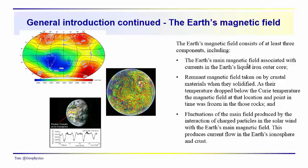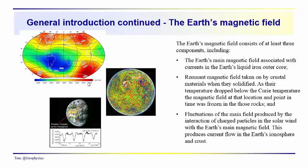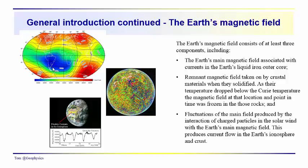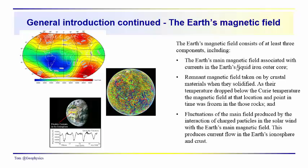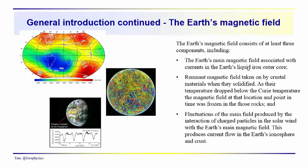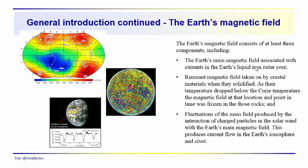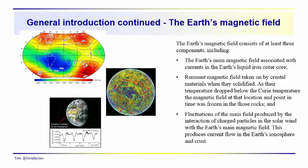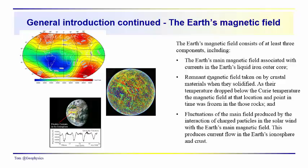The Earth's main magnetic field, for example, which spans about 40,000 to 45,000 nanoteslas from minimum to maximum, is associated with the fluid flow in the liquid outer core. So currents are created in the Earth's liquid outer core that produce the features we see in the Earth's main magnetic field.